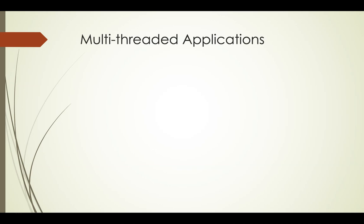Welcome back students. This is the first lecture in a new section on multi-threaded applications. Most of us are aware that modern computers can have multiple processes running simultaneously, and each of those processes is completely independent. They have their own memory allocated for them and don't have to share memory or other computing resources. In fact, if you have a multi-core CPU, the different processes may actually be running on completely different central processing units.